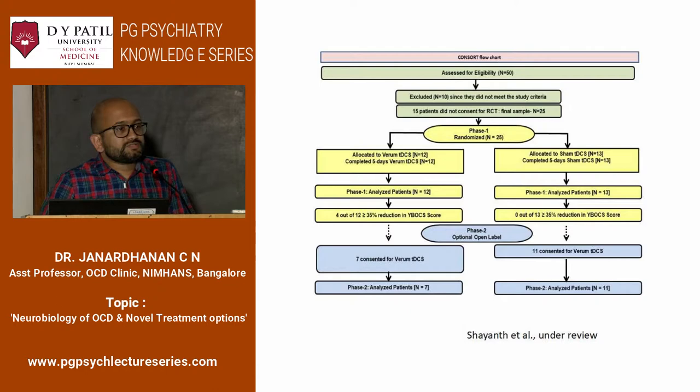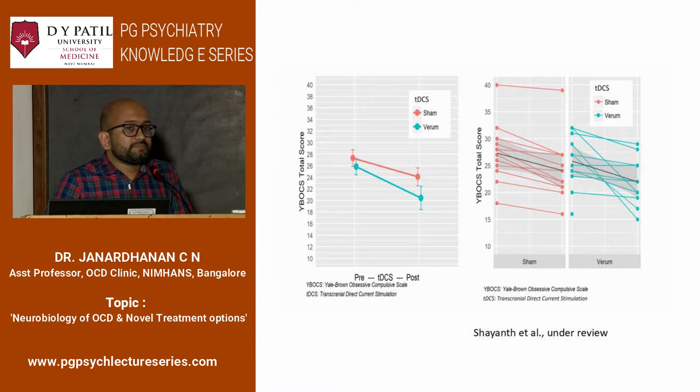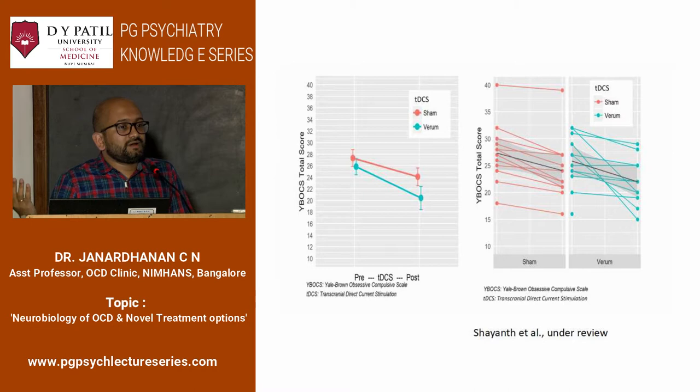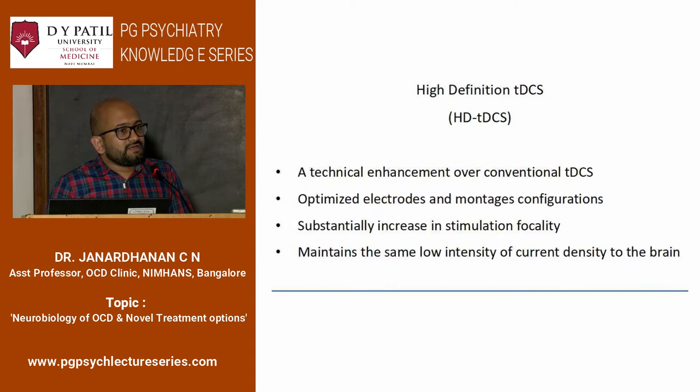The result of the study: there was a significant difference between true and sham tDCS. Out of 13 who received sham, none had responded. Out of 12 who received true, 4 had responded. There was a significant change in terms of Y-BOCS reduction of at least 25-35 percentage.